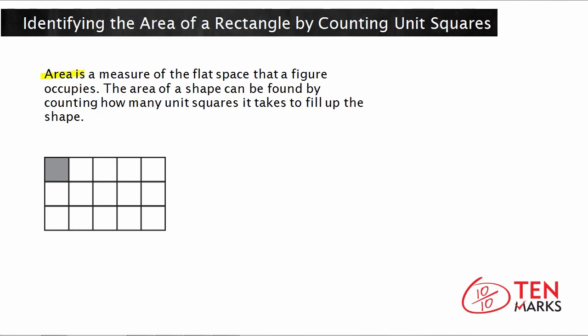The area of a shape can be found by counting how many unit squares it takes to fill up the shape. So let's look at a shape together. We've got this rectangle here. And as you can see, it's broken up into a number of squares. Now these are called unit squares.